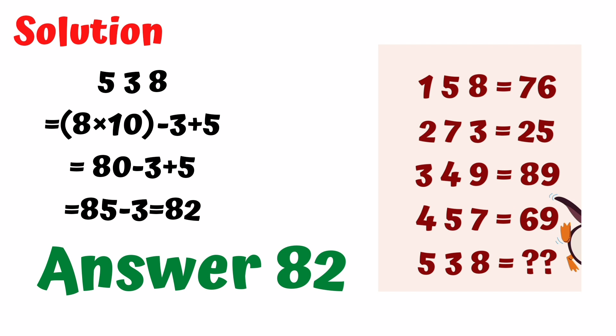So if we apply the trick to 5, 3, 8: the value is 8 times 10 minus 3 plus 5. Then solving: 80 minus 3 plus 5 equals 85 minus 3 equals 82. The answer will be 82.